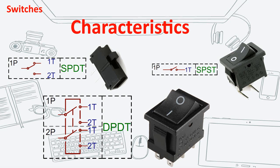A double pole switch can control two circuits. The switch's number of throws indicates how many positions each of the poles can connect to. For example, if a switch is a double throw, then each pole can be connected to two terminals. Knowing a switch's characteristics is helpful when choosing one that will fit your project.